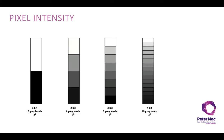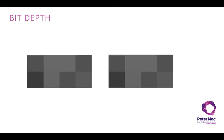Starting with bit depth: this is the number of grayscale values going between zero intensity and maximum intensity. A 1-bit image is basically two gray levels — either black or white — so 2 to the power of 1 is 2. As we go up, 2 to the power of 2 gives us four gray levels, and we go up and up until we come into microscopy ranges, which normally start at about 8 bits.